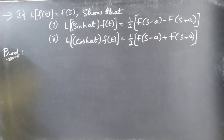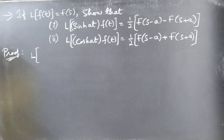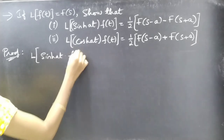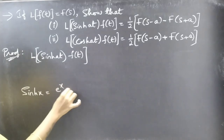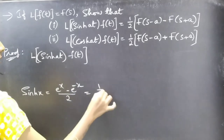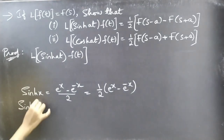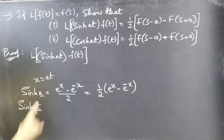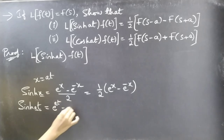We'll start with the first one. We need to show that L{sinh(at) · f(t)} = (1/2)[F(s-a) - F(s+a)]. We know that sinh(x) = (e^x - e^(-x)) / 2, or equivalently (1/2)(e^x - e^(-x)). Replacing x by at, we get sinh(at) = (1/2)(e^(at) - e^(-at)).